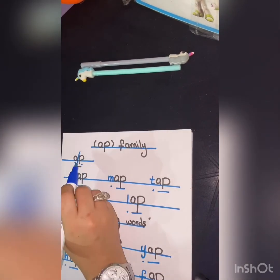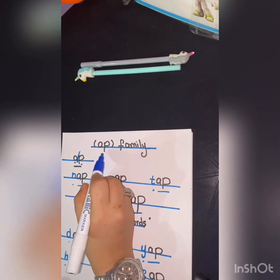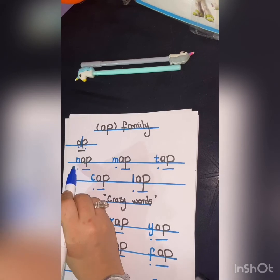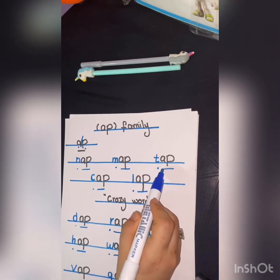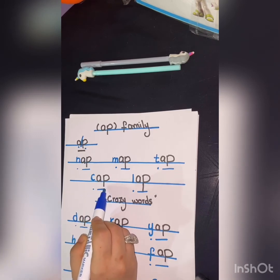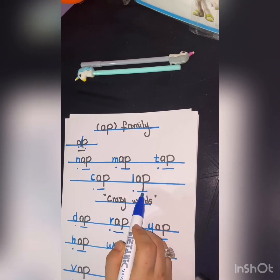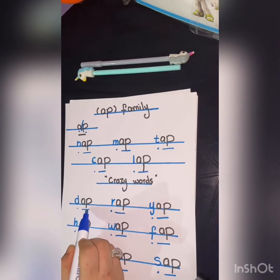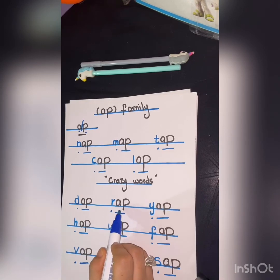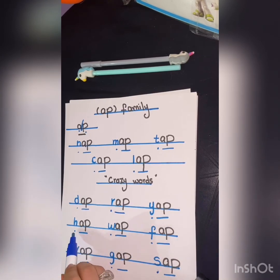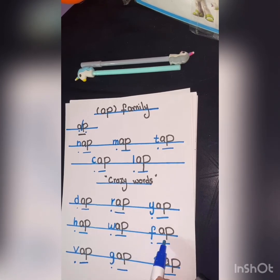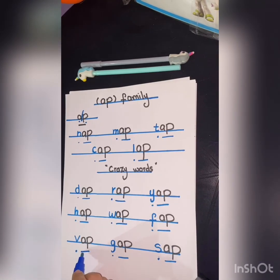Now repeat after me: app, N-app nap, M-app map, T-app tap, C-app cap, L-app lap, D-ap dap, R-ap rap, Y-ap yap, H-ap hap, W-ap wap, F-ap fap, Z-ap zap, G-ap gap.